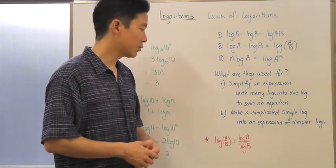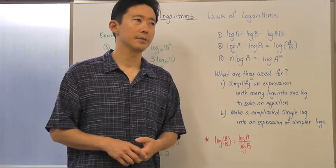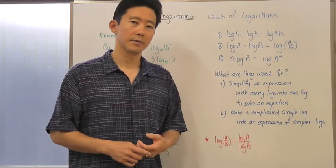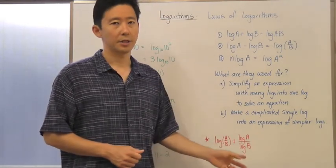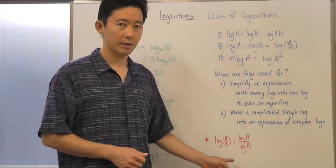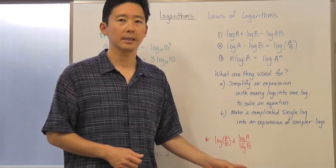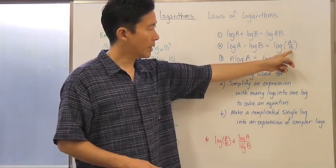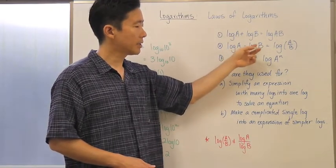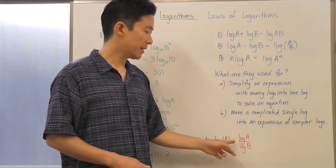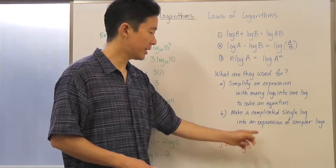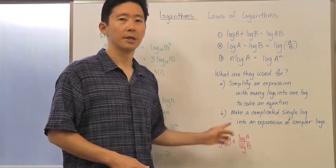One thing I want to mention — this is a mistake made by quite a few people when first learning these laws. The log of a over b is the difference of two logarithms: it's log a minus log b. It is NOT the same thing as log a divided by log b. Be very careful that you never make that association, because it is incorrect.